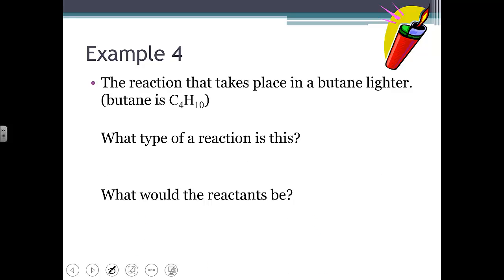Here's our fourth example. We have a butane lighter. Now, butane is C₄H₁₀. We'll just tell you that because you wouldn't know that formula normally. Now, if it's taking place in a lighter, what kind of a reaction is it? Because the whole point is to produce a flame, so a lot of heat and light. What should come to mind is that this is a combustion reaction.